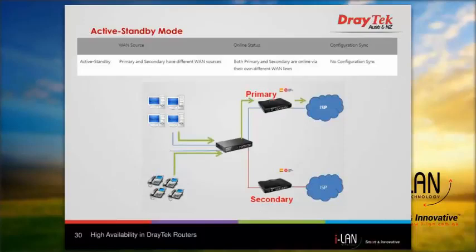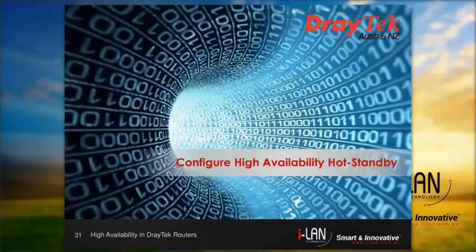But on the Vigor3900 and the 2960, there is the capability of flexible High Availability, with a feature to load balance traffic on the primary and secondary router WAN. We will now go through the key steps to configure the High Availability Hot Standby mode using DrayOS.